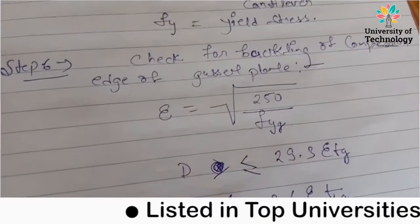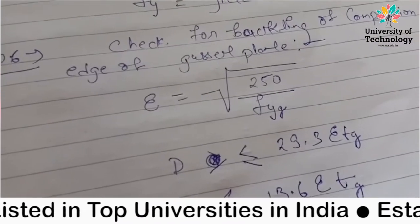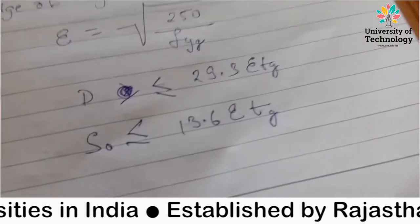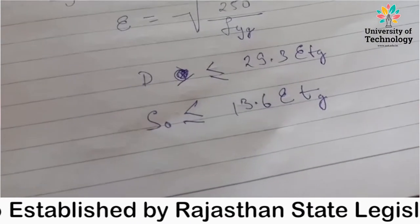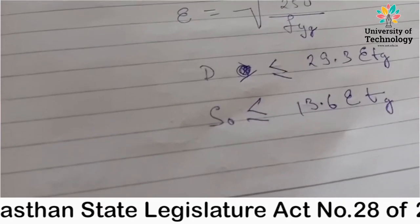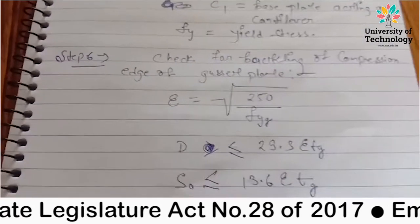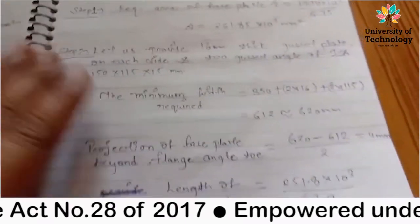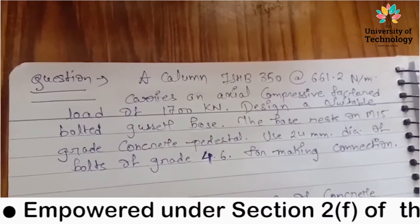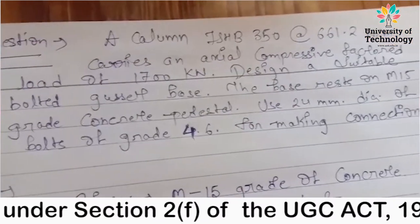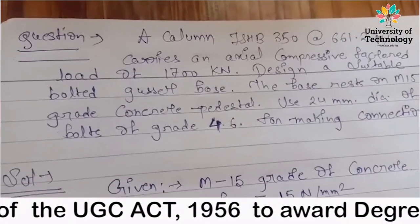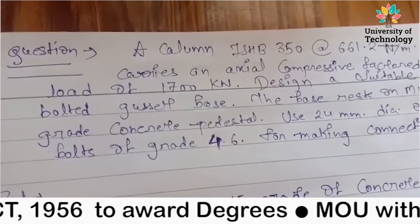We have to check first the E value from root over 250 upon F of Y. Now this is D and E both have to check, but in voltage case only you will have to check, and in welded both have to check. So now we have to solve questions.